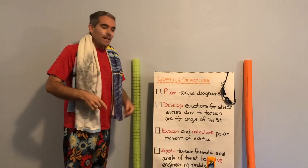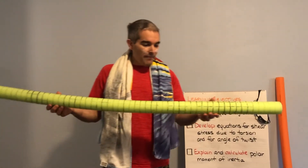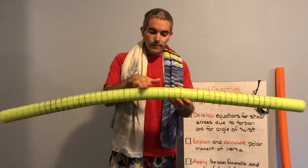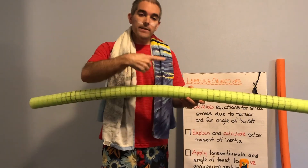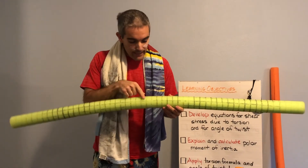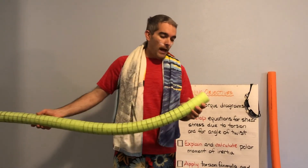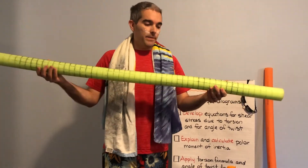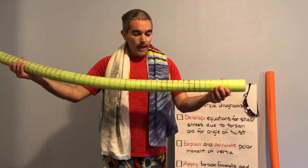To get started with our derivation, I have this special pool noodle here. We have a bunch of lines drawn on it, so hopefully you guys can see all those lines. We have some lines along the length and we have circular lines around the cross section, and they create these initial squares. Now we're going to apply a torque to this member and then I want you to make some observations. This is our initial state and then we apply a torque.